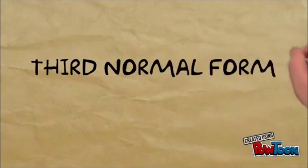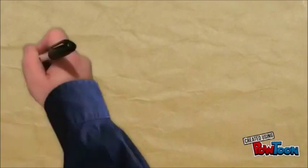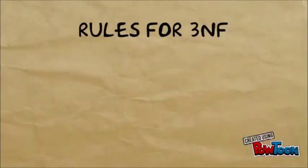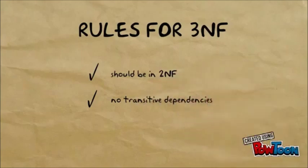We are now at the third normal form, the last of the initial normal forms proposed by Dr. Codd. A relation or table is in third normal form where the following conditions are met. It is in second normal form, and no transitive dependencies exist.